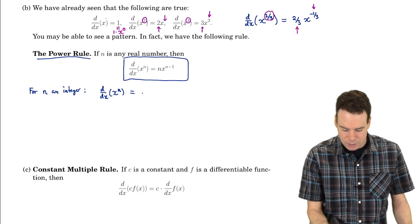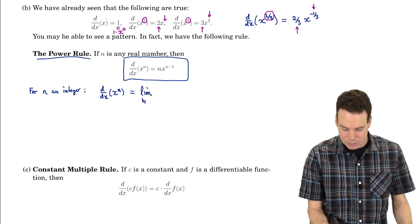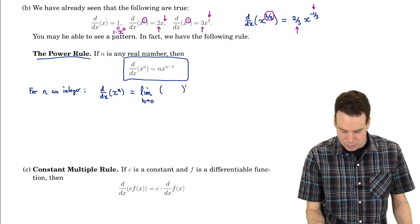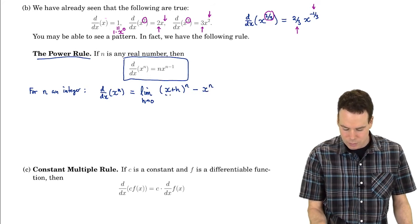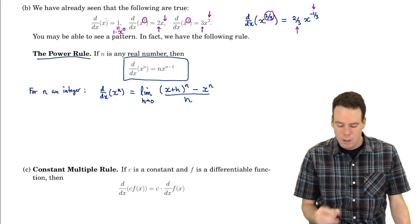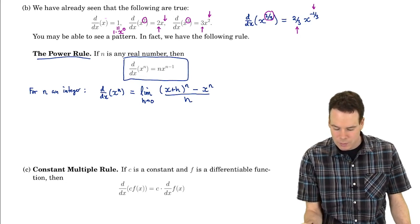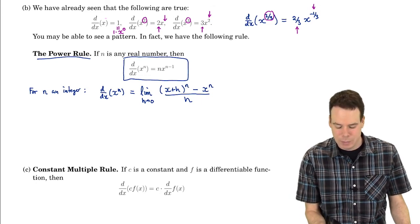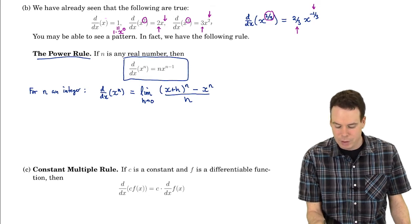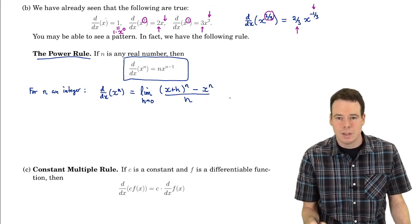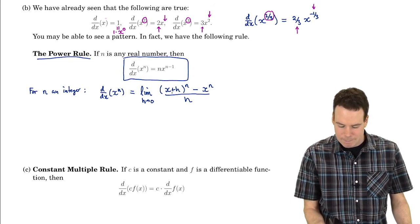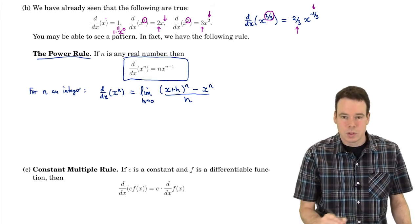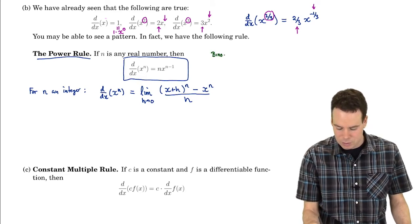For n an integer, how do we work out the derivative of x to the n? We only have the limit definition. So this is the limit as h goes to zero of x plus h to the power of n, minus x to the n, all over h. We can be guided by how we worked out previous derivatives — we expanded x plus h to the power of 2 or 3. In general, there is a result from our past that tells us what to do when n is an integer: the binomial theorem.